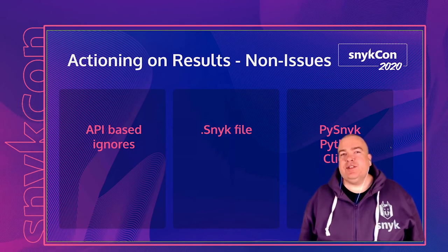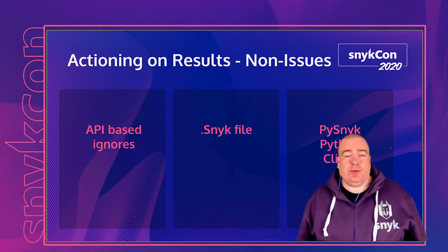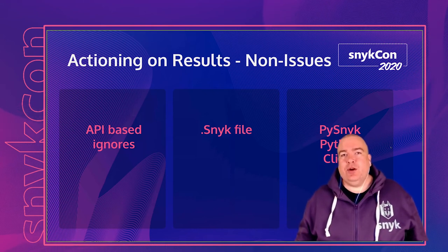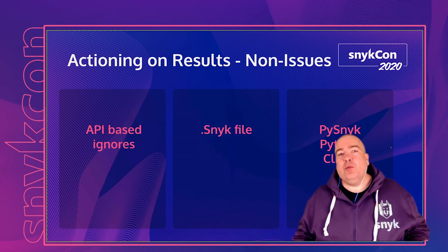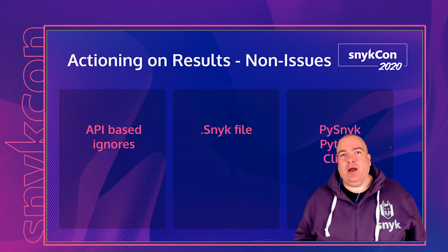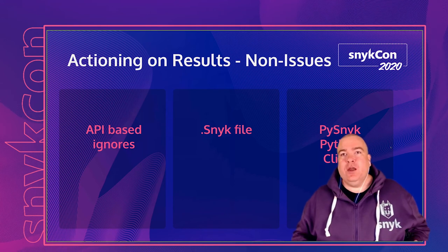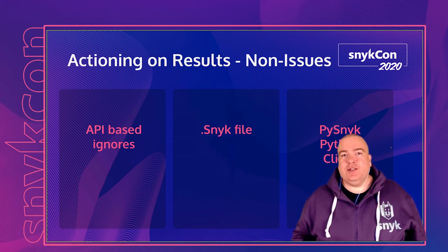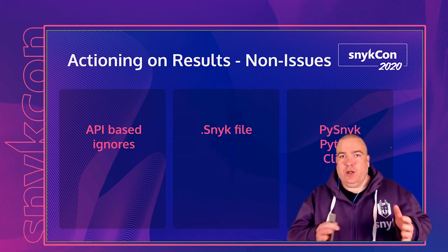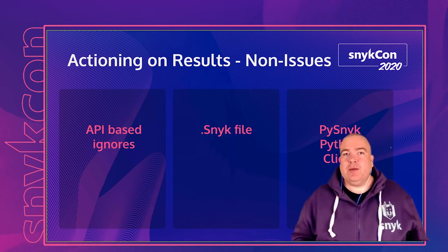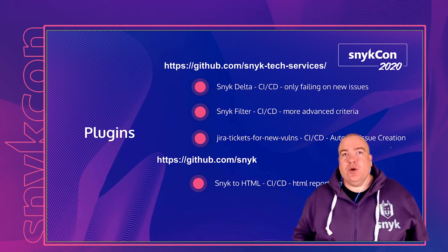The .snyk file or ignore policy used with CI/CD is typically stored in the root of your project, or within each folder where each manifest is located for a mono-repo. If you centralize your policy, understand you're making a decision to ignore a package across different applications in different contexts, so definitely do that risk assessment. Snyk gives you the capability to do it per manifest or using a more central policy.